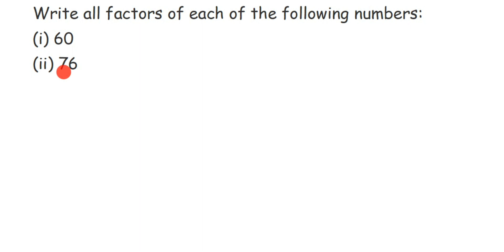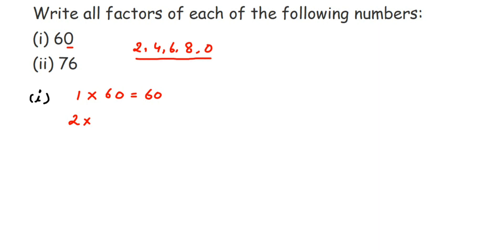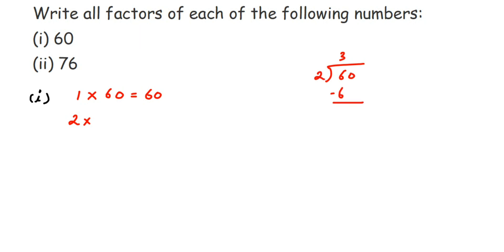Let's start with the 1 table — all numbers are divisible by 1, so 1 into 60 is 60. Now, does 60 go in the 2 table? Yes. Any number ending with 2, 4, 6, 8, or 0 is divisible by 2. So 60 is divisible by 2. Dividing 60 by 2: 2 threes are 6, drop the 0, 2 times 0 is 0, remainder is 0. So 2 into 30 is equal to 60.